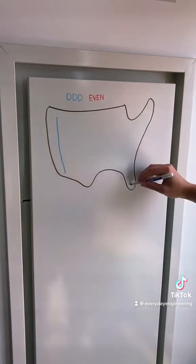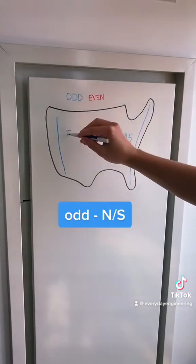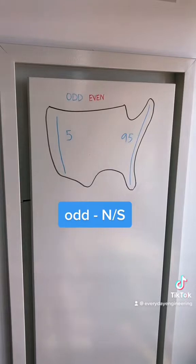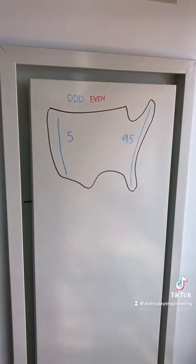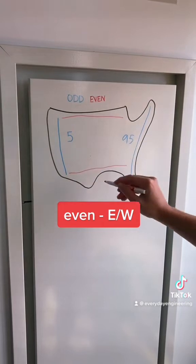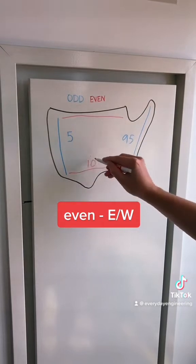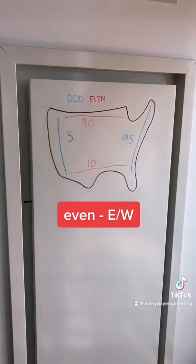If the route number is odd, it's a north-south route with the lowest numbers on the west coast and the highest numbers on the east coast. If the route number is even, it's an east-west route with the lowest numbers in the south and the highest numbers in the north.